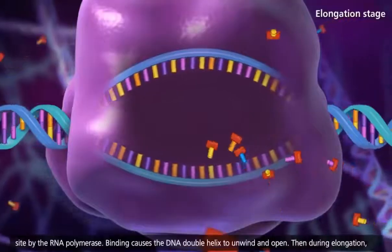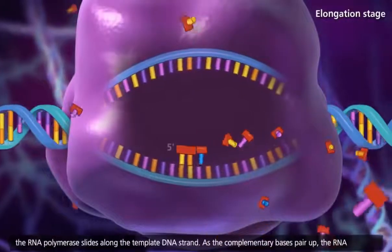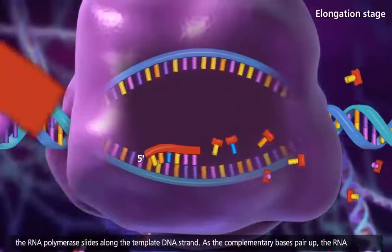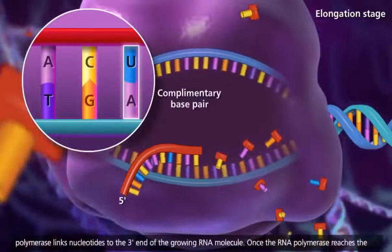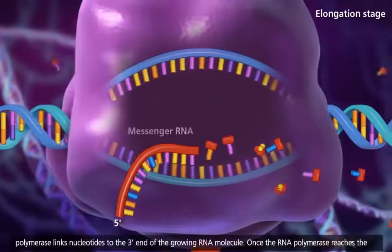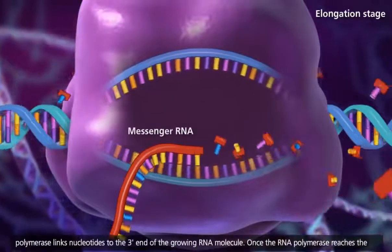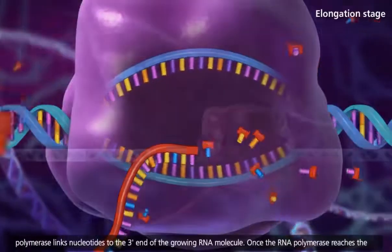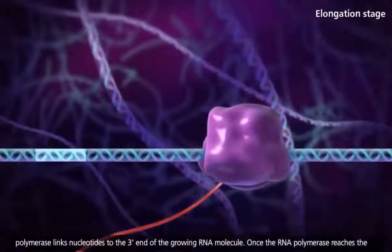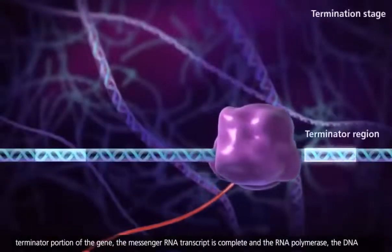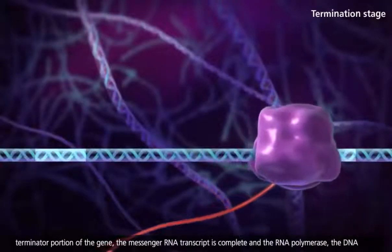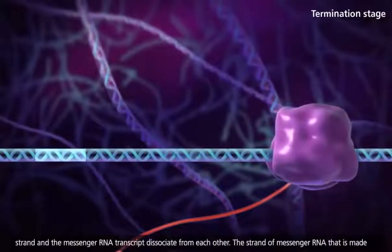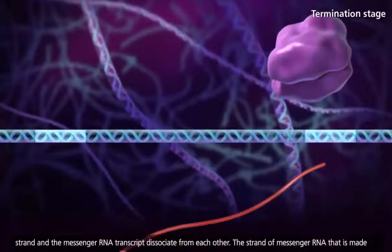Then during elongation, the RNA polymerase slides along the template DNA strand. As the complementary bases pair up, the RNA polymerase links nucleotides to the three-prime end of the growing RNA molecule. Once the RNA polymerase reaches the terminator portion of the gene, the messenger RNA transcript is complete, and the RNA polymerase, the DNA strand, and the messenger RNA transcript dissociate from each other.